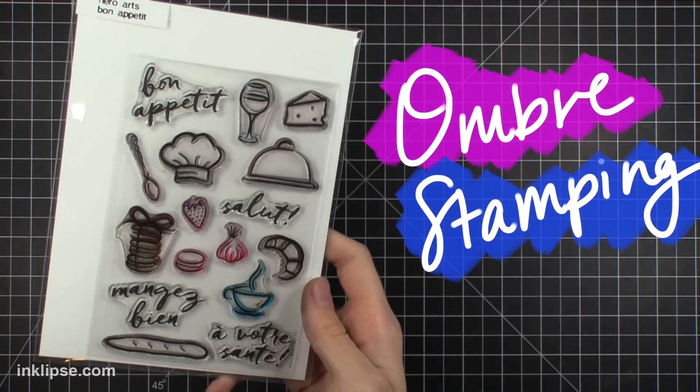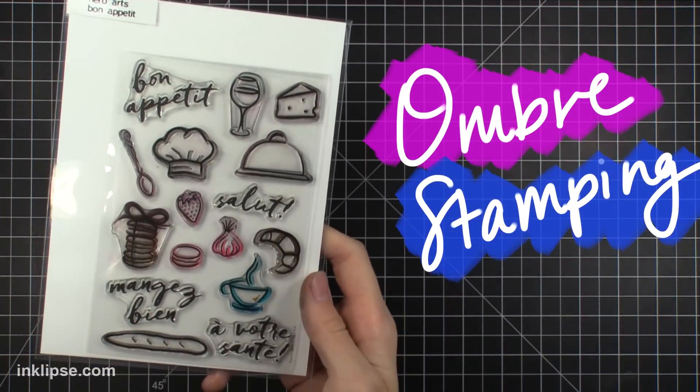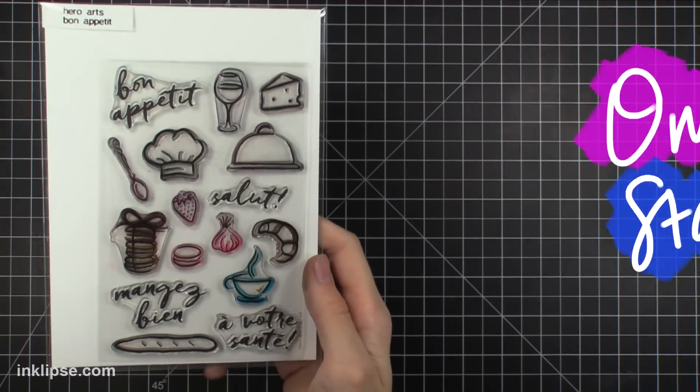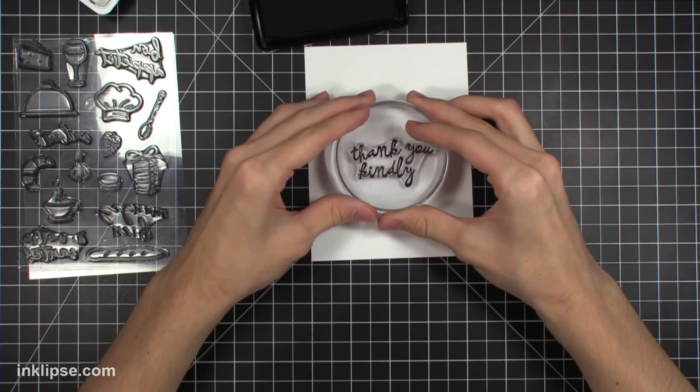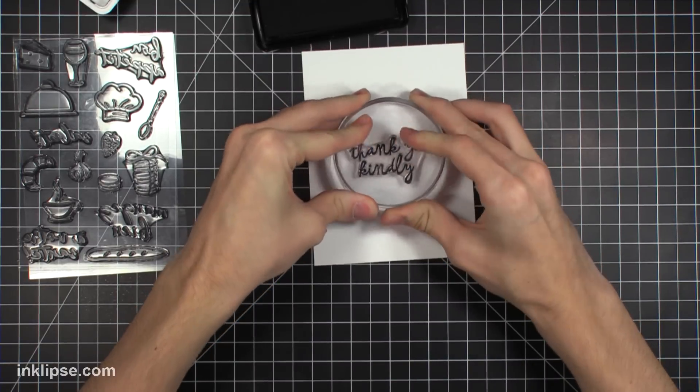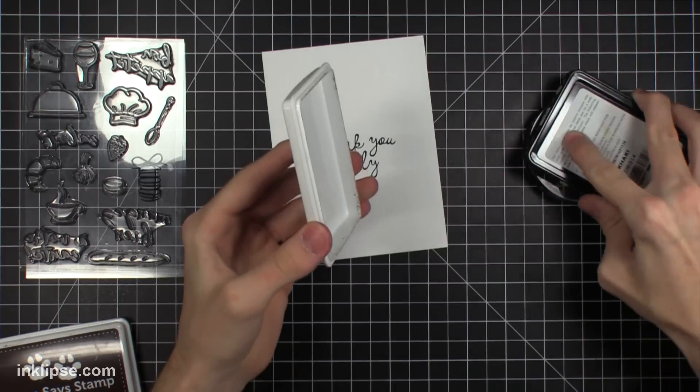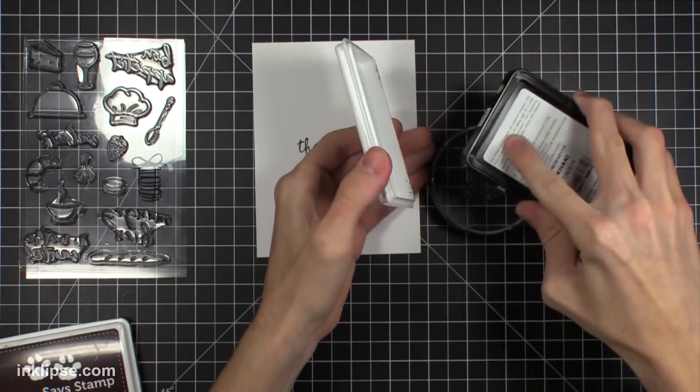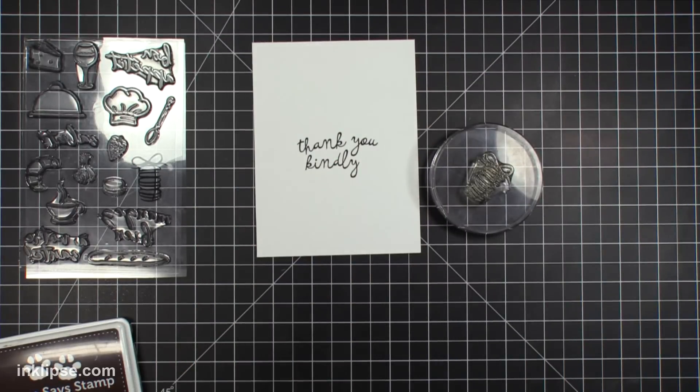This next technique is ombre stamping and you can get a really fun look from it with all your different colored ink pads if you have those or you could even use your ombre ink pads like I will later on in the tutorial. So I'm starting the card by just stamping my sentiment right in the center as well and then we're going to start off with the technique. So I'm going to use the lightest color of ink and I'm going to dab that right onto my stamp.